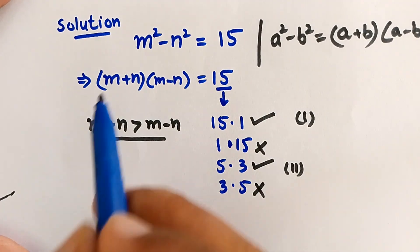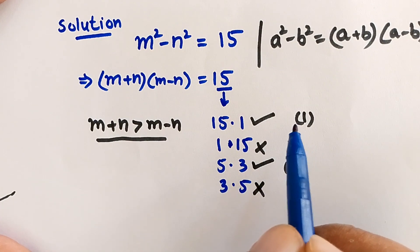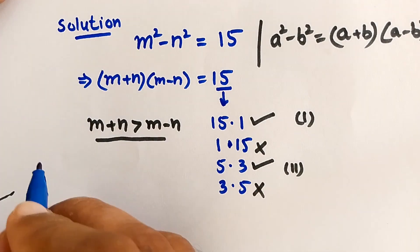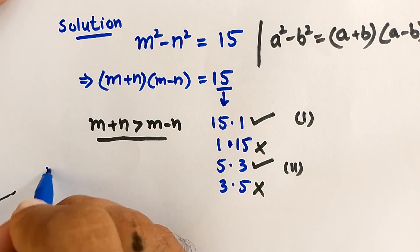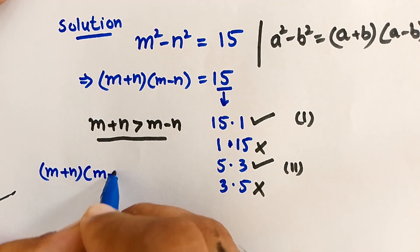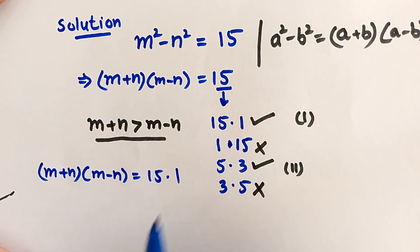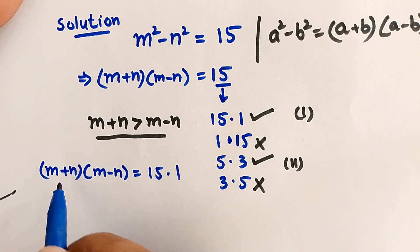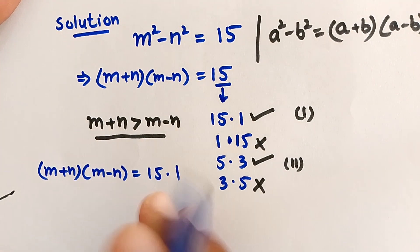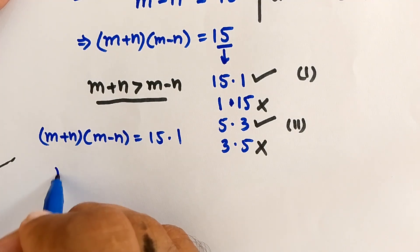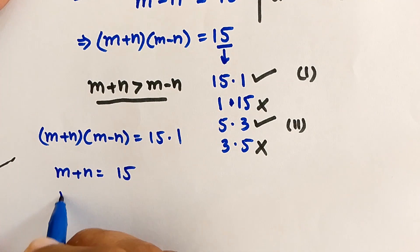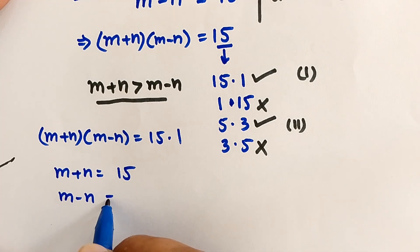First, we solve case number one: m plus n times m minus n equals 15 times 1. From this, m plus n is equal to 15 and m minus n is equal to 1.